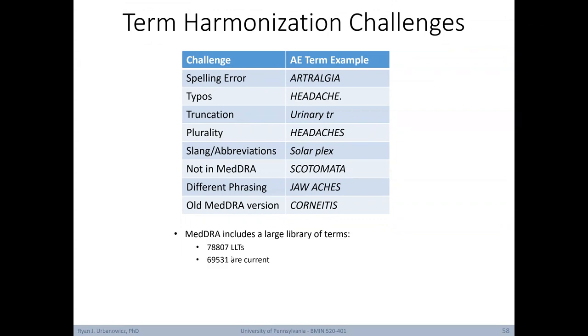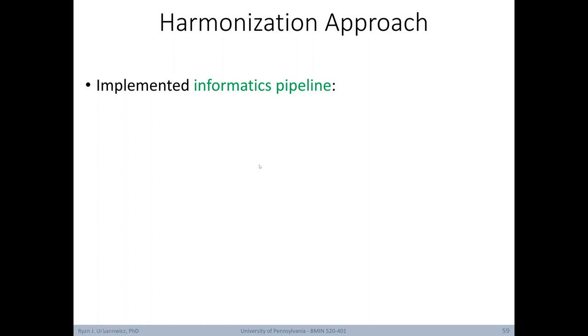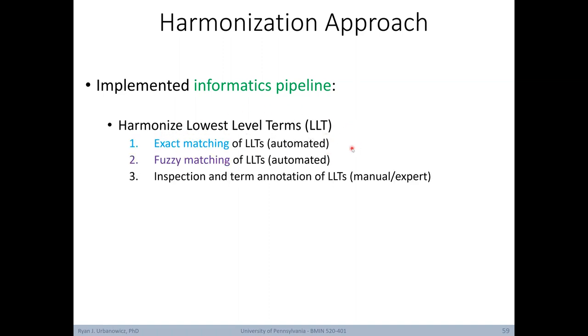Within our clinical trial datasets to be harmonized, we had over 20,000 unique adverse event text entries and over 21,000 unique medical history text entries. Here's an overview of our approach to conduct this harmonization. Our informatics pipeline began by harmonizing the lowest level term. We began by automating a search for exact matches. These were the easy terms to harmonize. Next, we applied fuzzy matching, which I'll describe in the next slide. This automated process basically gives us a best guess of what might be the most appropriate match between the term in our dataset and the term in our ontology standard. Lastly, we had a clinical expert use the results of fuzzy matching to verify or complete any annotations that couldn't be determined through exact matching.